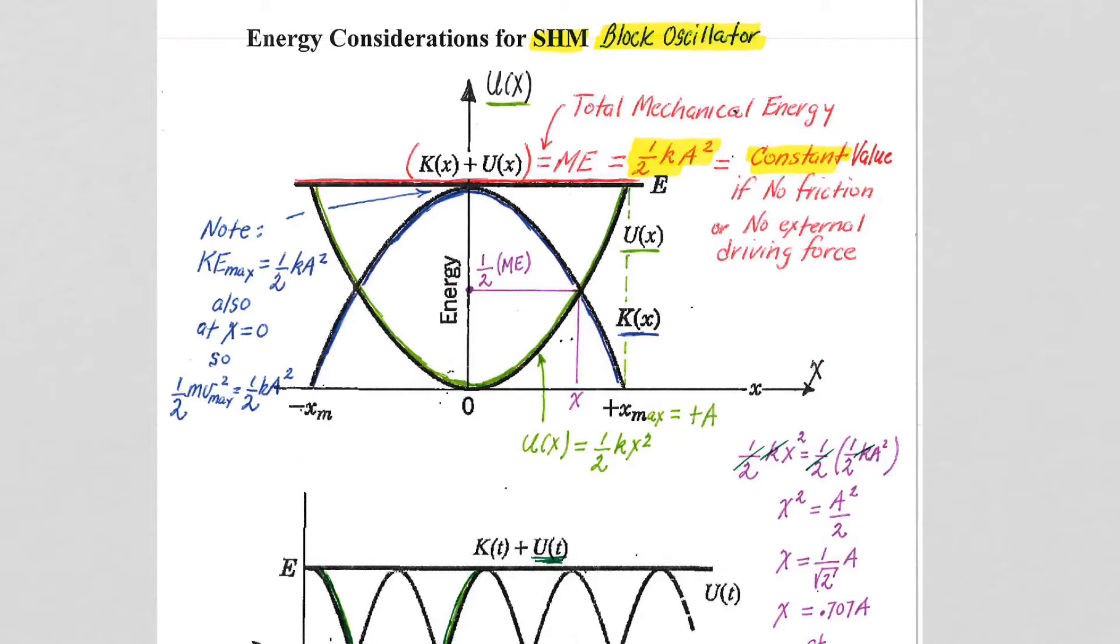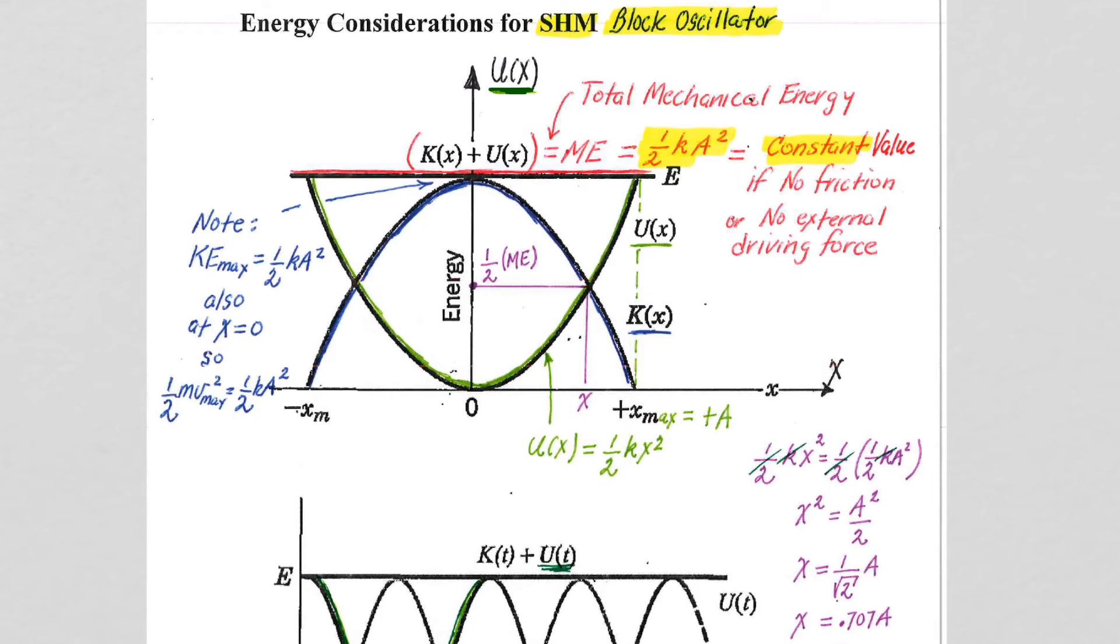Hopefully you recognize this potential energy graph from when we did Hooke's Law and the spring earlier in the year, because this is an exact copy of that energy graph. So the good news here is that the energy is the energy of a block on the end of a spring.